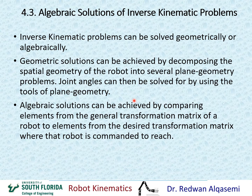For the algebraic solution, we can achieve that by comparing elements from the general transformation matrix obtained from forward kinematics to the desired transformation matrix that we are given and commanded to go to. By comparing elements from both matrices, we can extract equations and solve them for the joint angles we're trying to find.